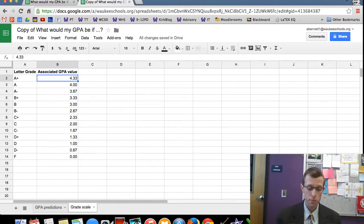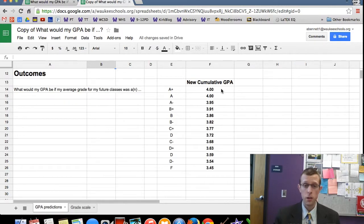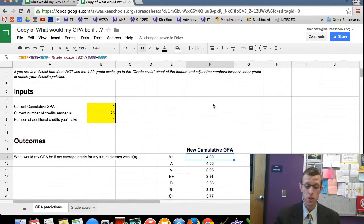So maybe yours only goes up to a 4.0—you can change those values, and then the predictions over here are going to be affected as well. When we change the scale, we no longer have numbers above a 4.0 for our predictions.